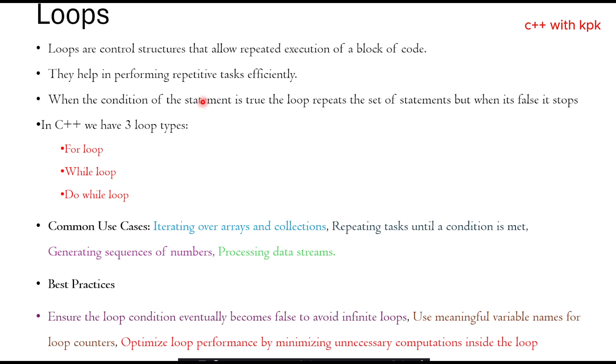In C++ we have three types of loops: the for loop, the while loop, and the do while loop. We'll be looking at them in our next lessons.